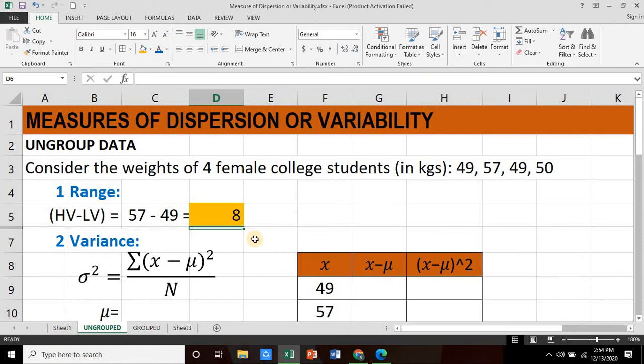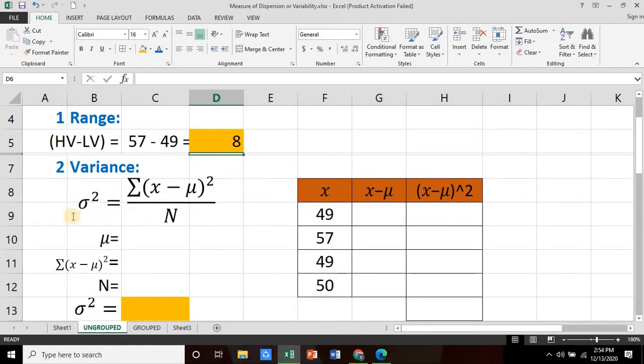Second is the variance. The symbol is sigma squared (σ²). And the formula is the summation of the square of the difference of the observation and the mean. That is the Greek letter mu (μ) divided by the total number of observation. So we'll be needing two variables to complete the formula. We have the summation of the square of the difference of x and μ and, of course, capital N.